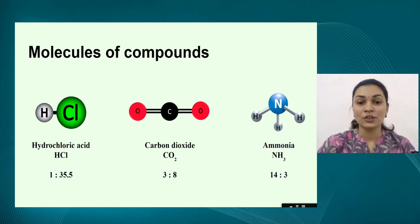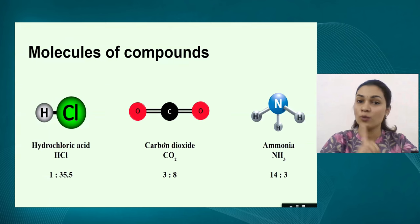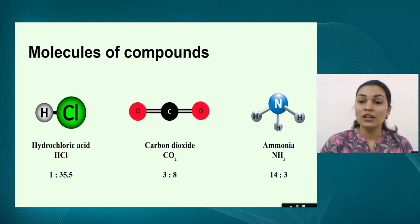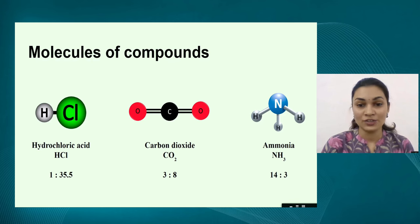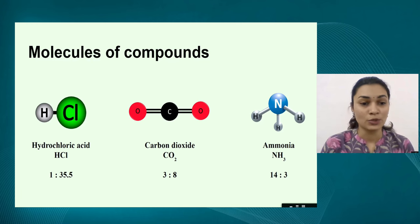The second example is carbon dioxide, a very common gas. It is CO₂ — that means one molecule of carbon dioxide has one carbon atom and two oxygen atoms. The third example is ammonia, also a very common gas. It is NH₃, meaning it is made up of one nitrogen atom and three hydrogen atoms. Below each of these molecules you can see a ratio written — some numbers are written below them.